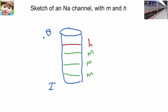For the channel as a whole to be open, all four of these particles have to be open. So, that says the probability that all four are open.